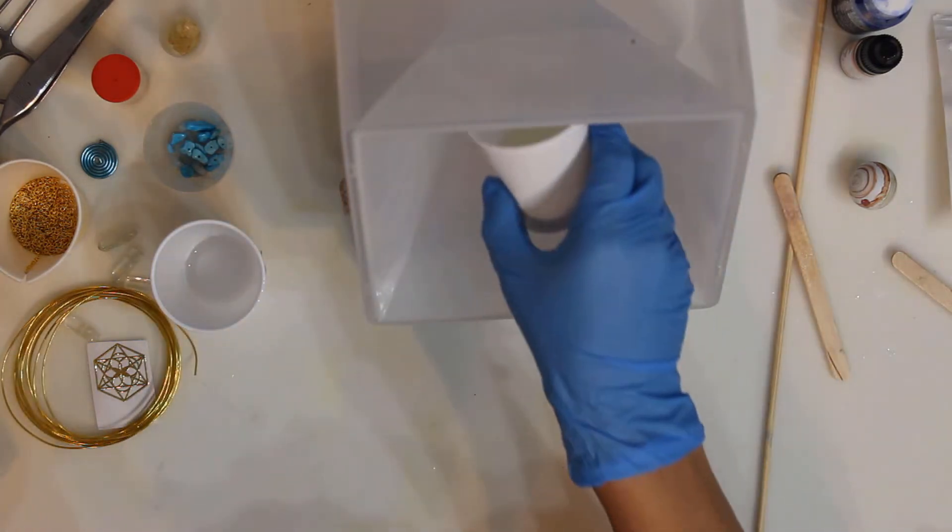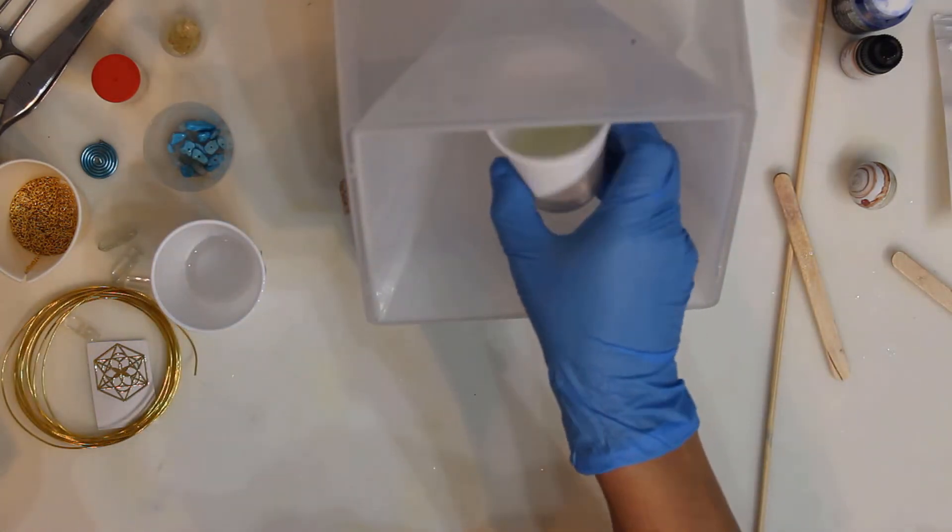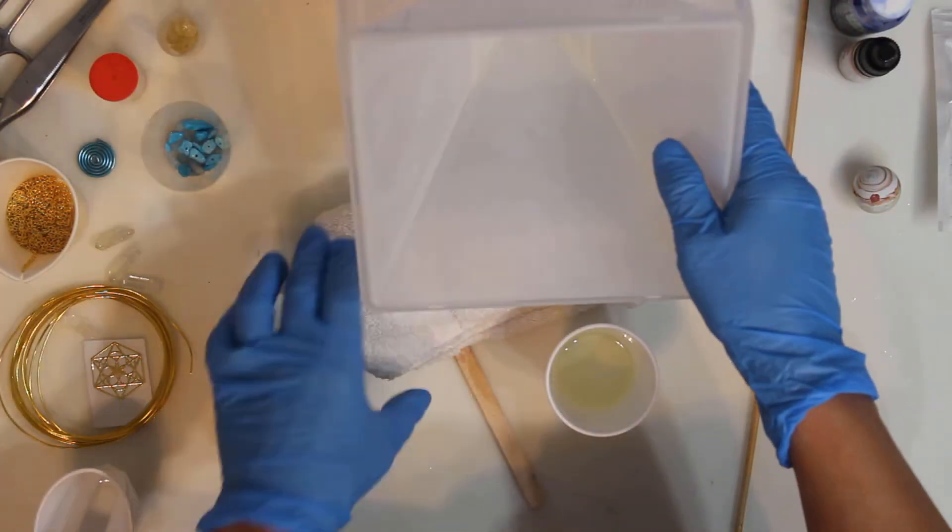After six to eight hours the resin is cured enough to rotate the mold to the next side. This takes a while but it is well worth the wait. The tilt technique provides a strong structure for the large planetary energies.